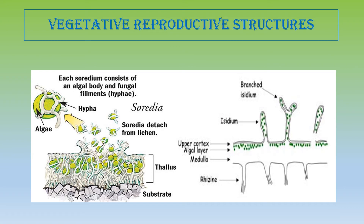The lichen grows by either vegetative or sexual methods. Among the vegetative methods, we see soredia and isidia. Soredia are a mixture of algal and hyphal cells, as are isidia, but the main difference is physical: soredia are globose while isidia are cylindrical, either branched or unbranched. Despite their physical difference, physiologically they are very similar.